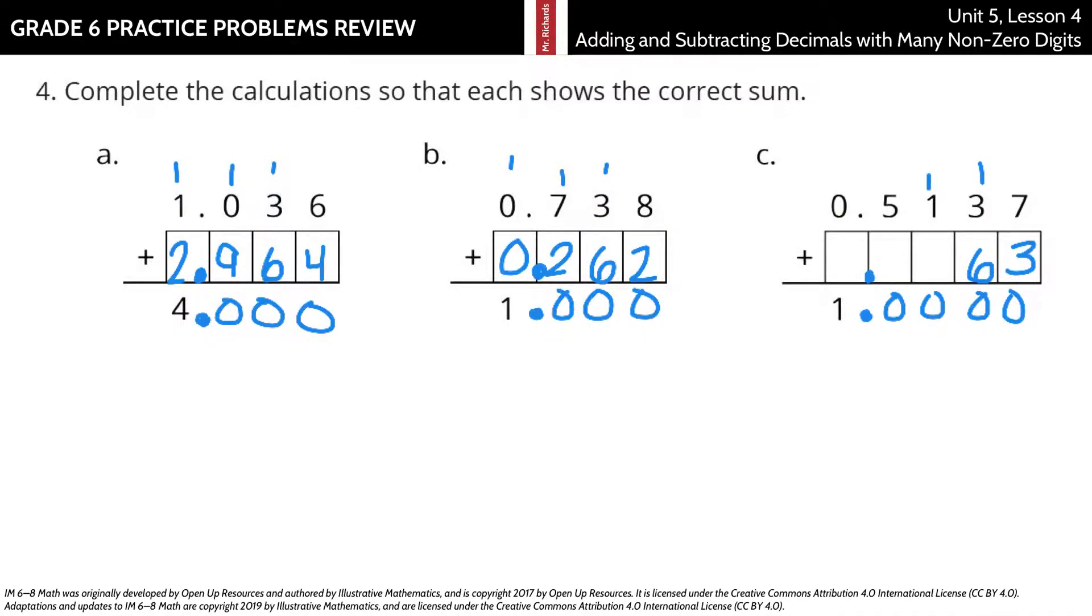Carry the one. Two plus what gets me to ten? Eight. Carry the one. Six plus what gets me to ten? Four. Carry the one. I just need a zero there to finish. 0.4863.